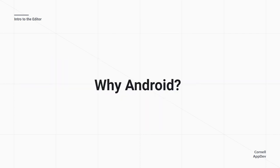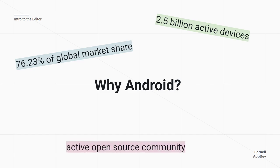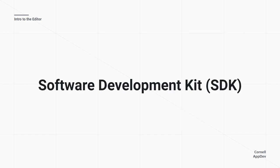Why Android? On Cornell campus it's hard to understand why since most phones we see are iPhones. But Android covers over three quarters of the global market share for mobile phones, meaning you're affecting over 2.5 billion people. There's a very active open source community, libraries and third-party tools come from that community, it can be coded on almost all operating systems — Windows, Linux, or Mac — giving a very low barrier to entry, and it's a common platform in emerging markets.